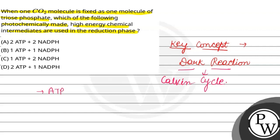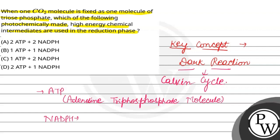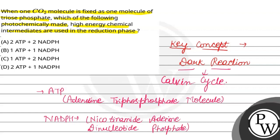तो यहाँ पर ATP — that is adenosine triphosphate — और NADPH — that is nicotinamide adenine dinucleotide phosphate — यह light reactions के products हैं। और dark reaction में यह use होते हैं so that one molecule of glucose बन सके।